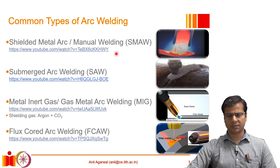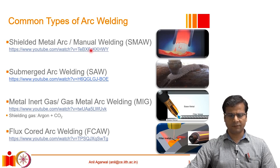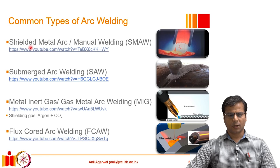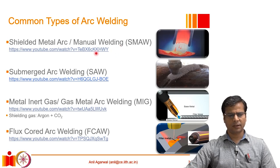I would strongly recommend all students to go through four YouTube videos on the different types of arc welding processes. Links will be shared in the description of this video — please pause here and go through those four videos. The first welding process is shielded metal arc welding, also typically known as manual welding or SMAW. Whenever you see a worker holding an electrode and welding by hand, that is usually the manual welding process.